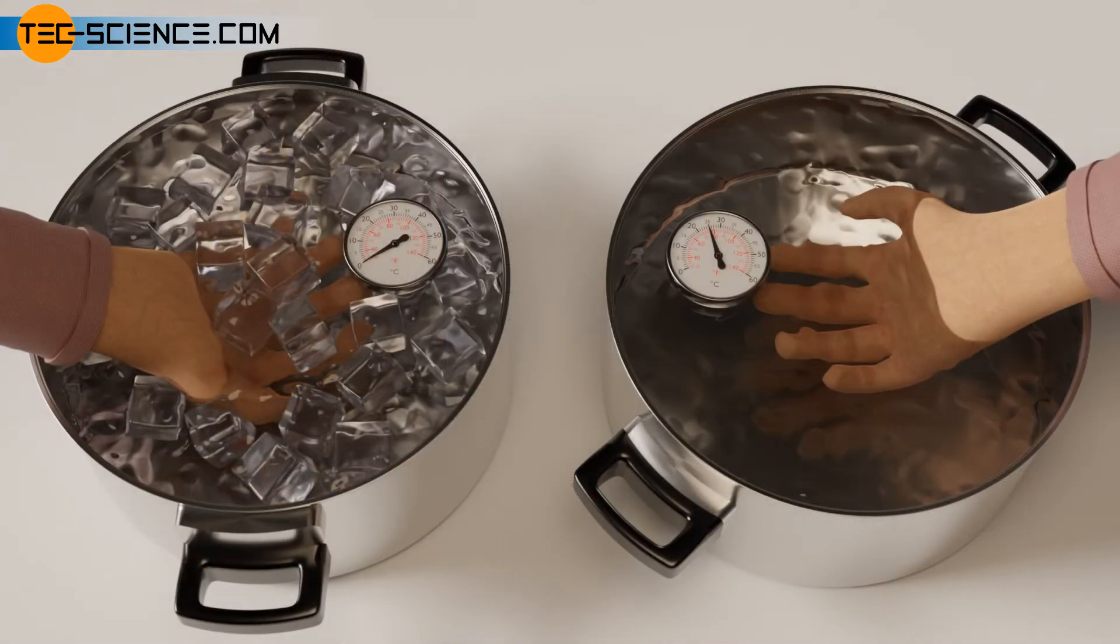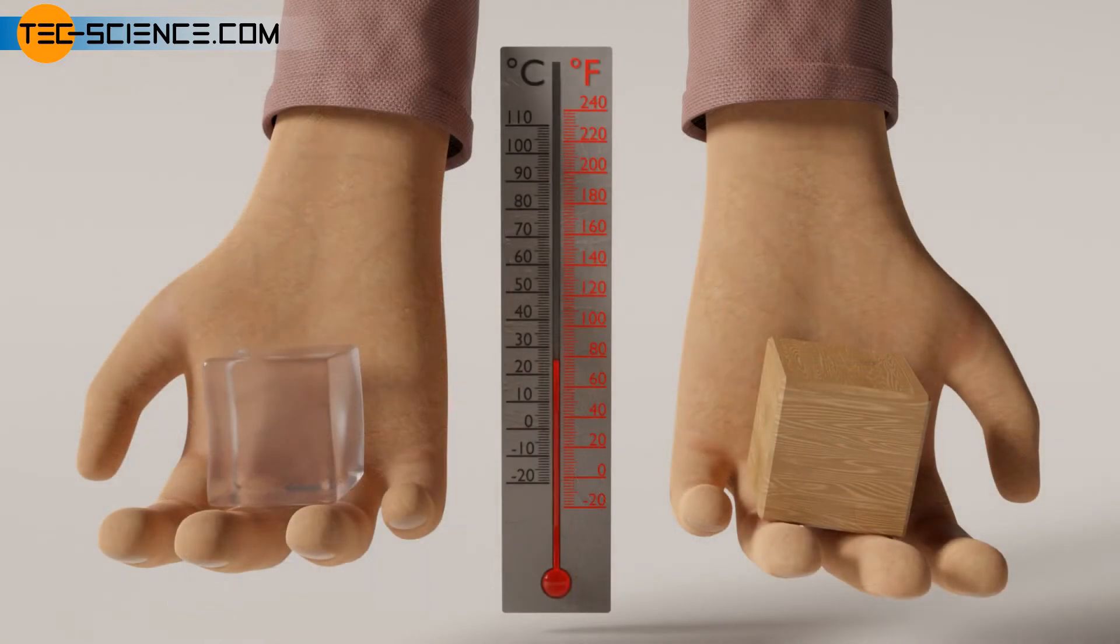For example, if we hold a hand in ice water and then put it in a pot of warm water, it feels much hotter than if we hold an uncooled hand in the pot with warm water. Defining the temperature of a substance by the human sensation of being hot or cold therefore fails.